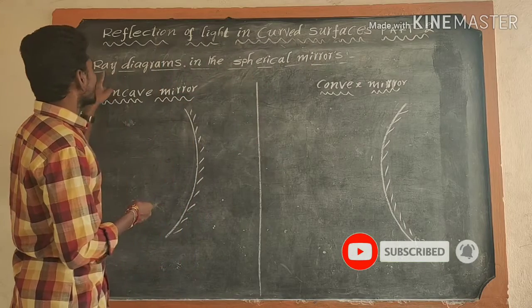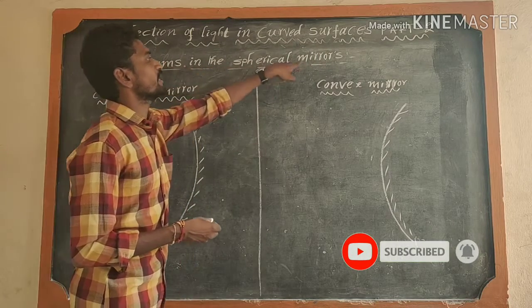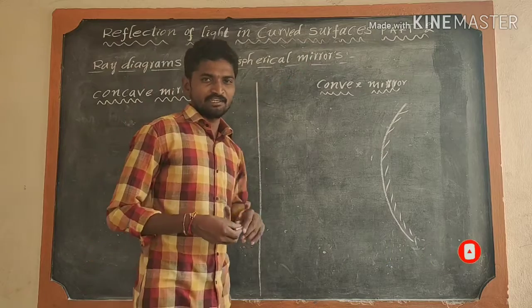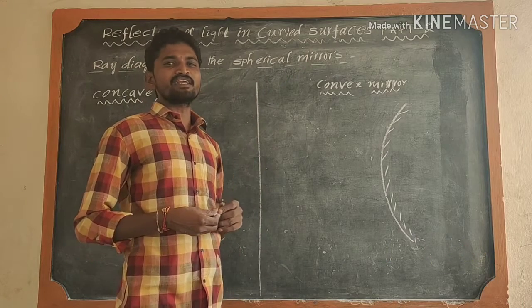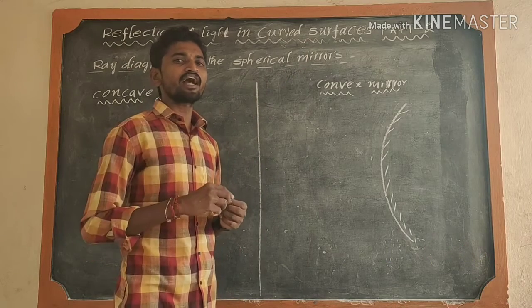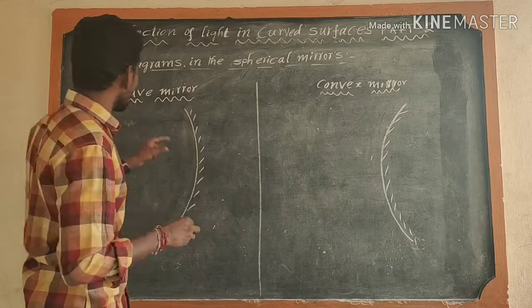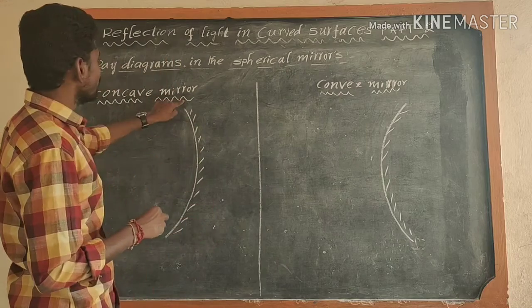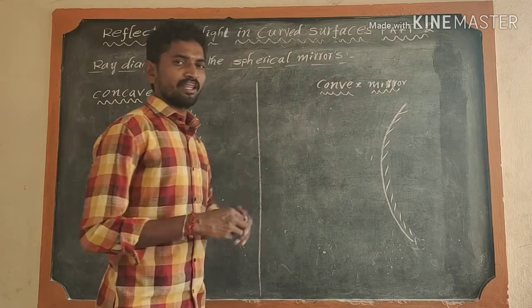Next, we have ray diagrams in the spherical mirrors. What are spherical mirrors? Spherical mirrors are classified into two types: concave mirror and convex mirror.